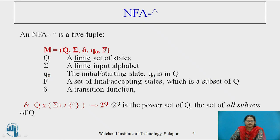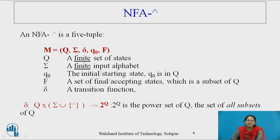Here is the definition. NFA with a null transition is a five-tuple machine M, where Q indicates a finite set of states, alphabet is a finite set of input symbols, Q0 is the initial or starting state which belongs to Q, F is the set of final or accepting states which is a subset of Q, and a transition function. We will see the differences between the transition functions of DFA, NFA, and NFA with null.